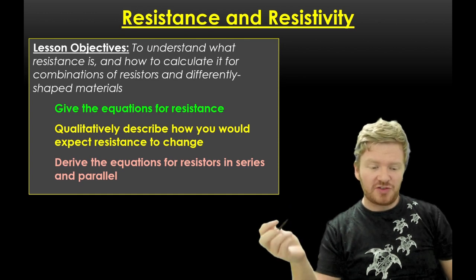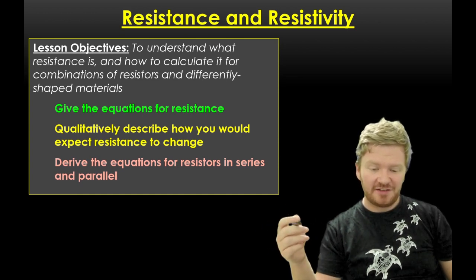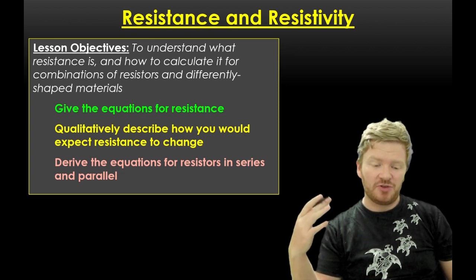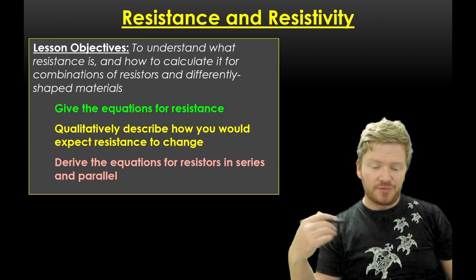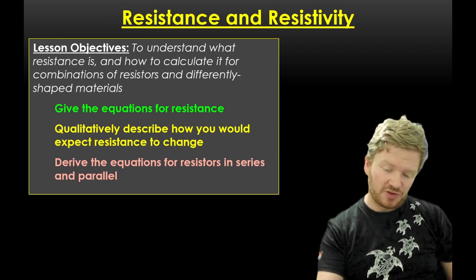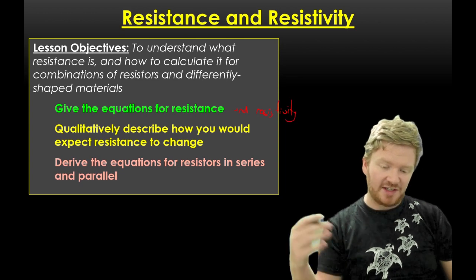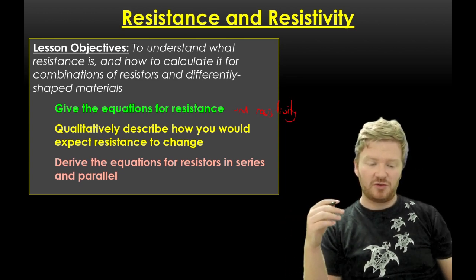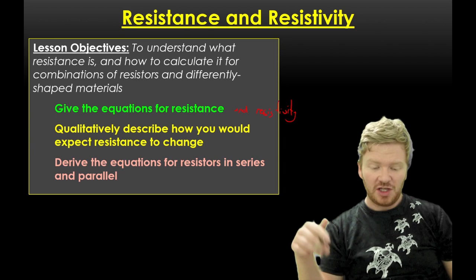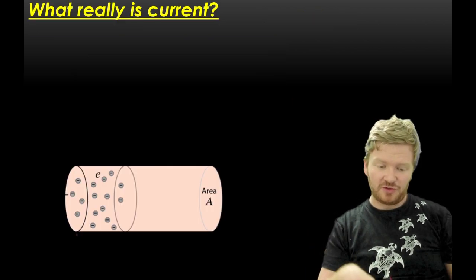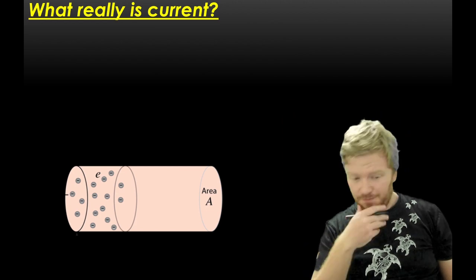By the end of this, you should understand what resistance is, how to calculate it for a combination of resistors and for differently shaped materials. You need to give the equations for resistance and resistivity, be able to qualitatively describe how resistance changes around a circuit, and we're going to look at how to derive equations for resistors in series and parallel.